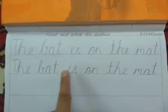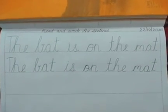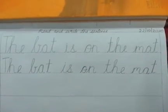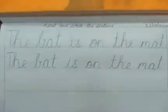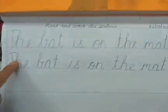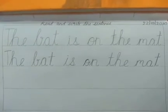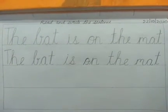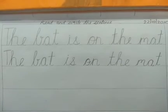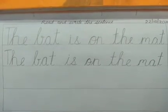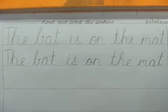Children, I want you to write exactly in this way in the next two lines. You are going to practice writing the sentence three times. We are going to be doing this writing of sentences more often now in our literacy class. Happy learning, children. Bye!